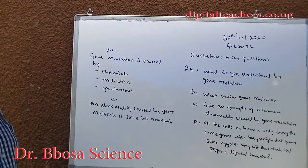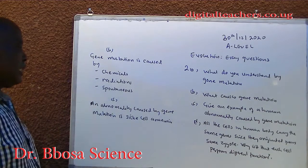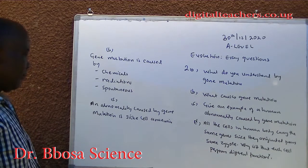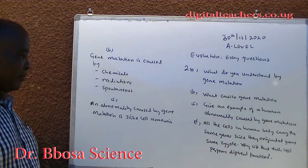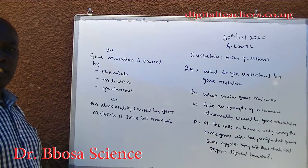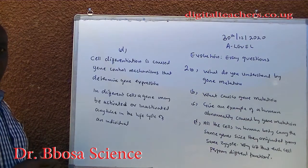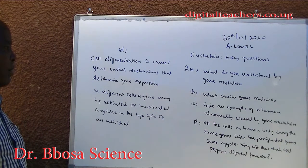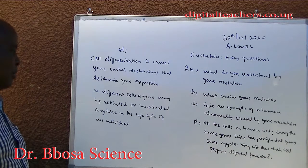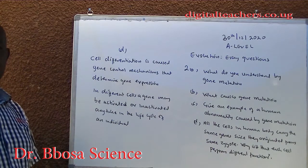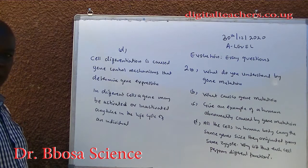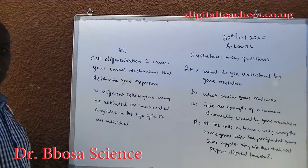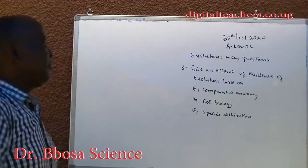B. Gene mutation may be caused by chemicals, radiation, or it can be spontaneous. C. An example of an abnormality caused by gene mutation is sickle cell anemia. D. Cell differentiation is caused by gene control mechanisms that determine gene expression. In different cells, a gene may be activated or inactivated at any time in the life cycle of an individual.